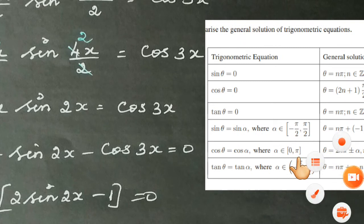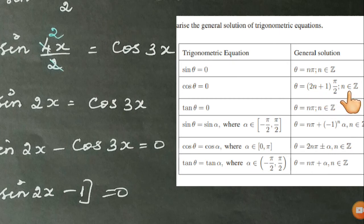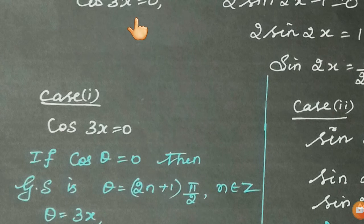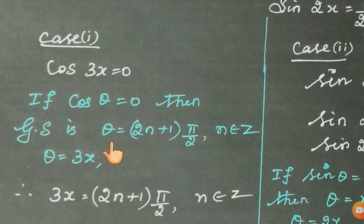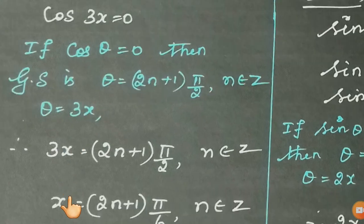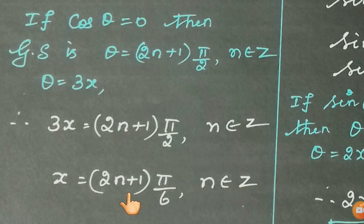For Case 1: cos 3x equals 0. The general solution formula for cos θ = 0 is θ = (2n+1)·π/2, where n belongs to Z. Applying this, 3x = (2n+1)·π/2. Dividing both sides by 3, x = (2n+1)·π/6, where n belongs to Z.